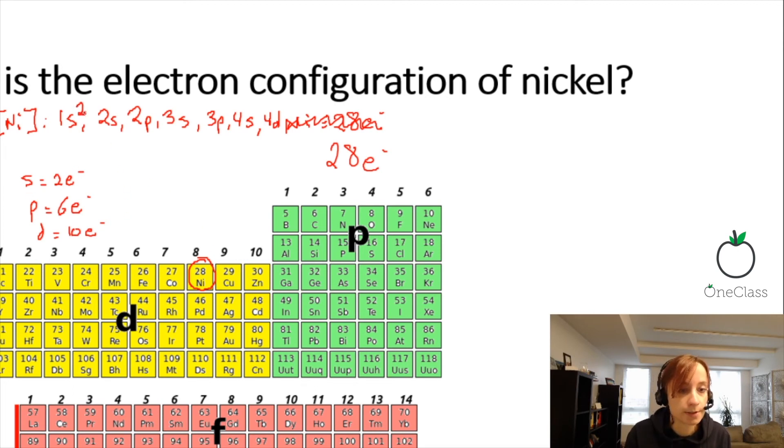We're going to number in order until we end up with 28. So that's 2 here, 4, 6 here gives us 10, 11, 12, another 6 is 18, 19, 20. Now 4d can hold 10, but we only have 8 electrons left, so it just stops at 8.